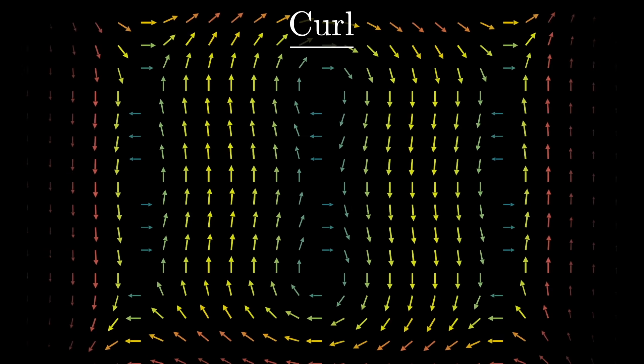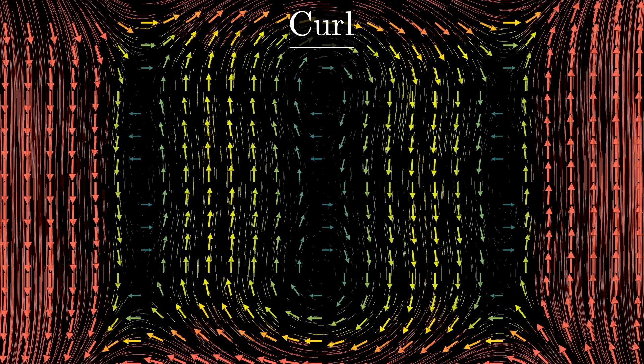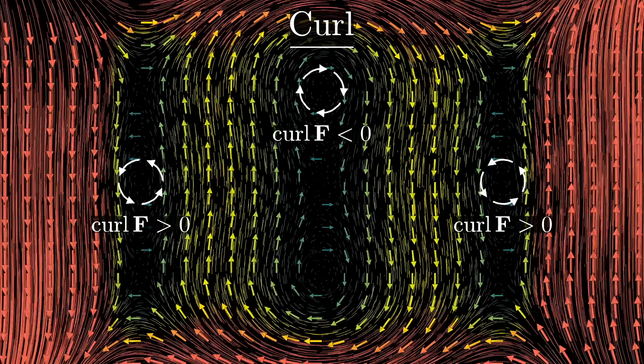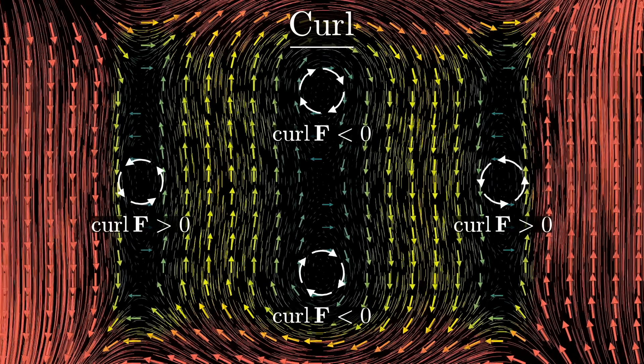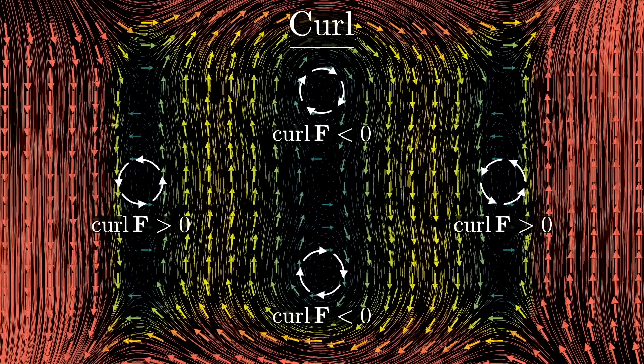For the curl at a given point, you also think about the fluid flow around it, but this time, you ask how much that fluid tends to rotate around the point. As in, if you were to drop a twig in the fluid at that point, somehow fixing its center in place, would it tend to spin around?